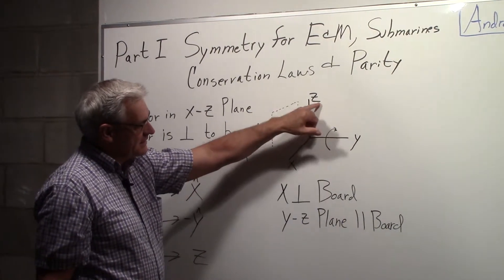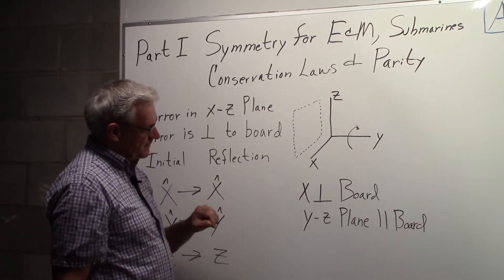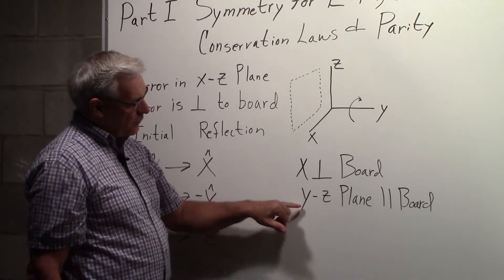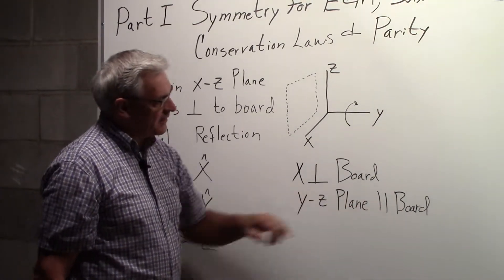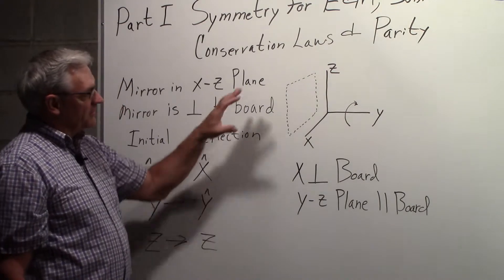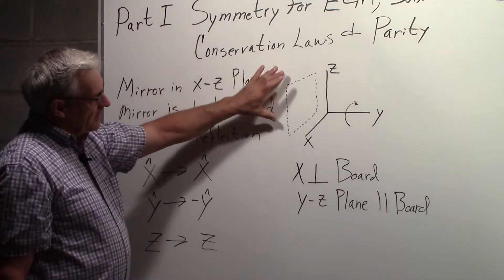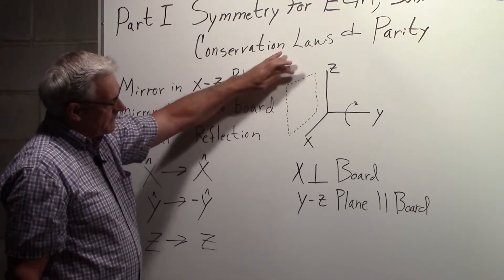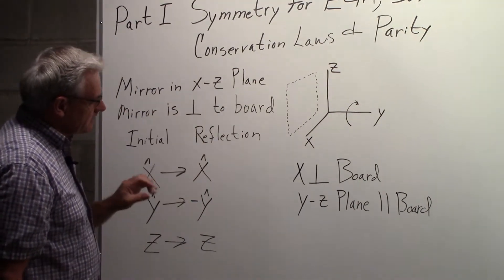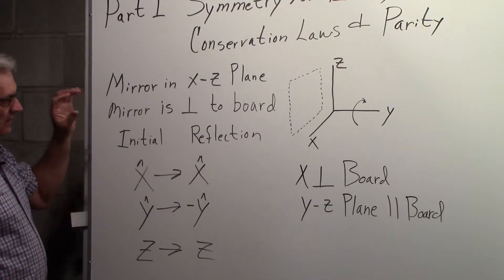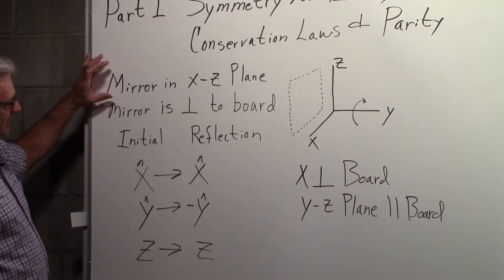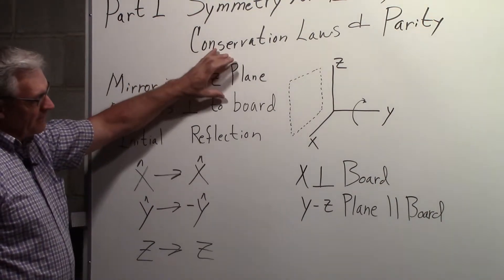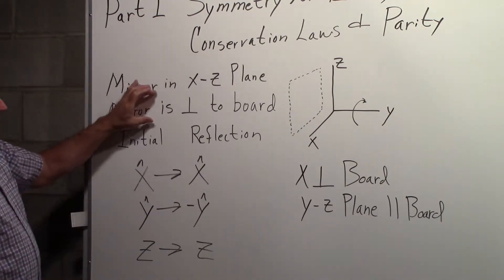Here's an XYZ coordinate system — the x-axis is perpendicular to the board and the YZ plane is parallel to the board. We're also going to consider reflections for the symmetry operations. Here I've sketched in the mirror; you have to understand the orientation of that mirror, so the mirror is in the XZ plane.